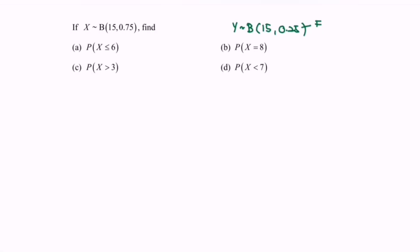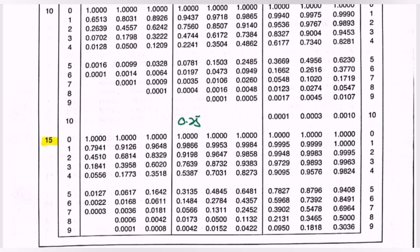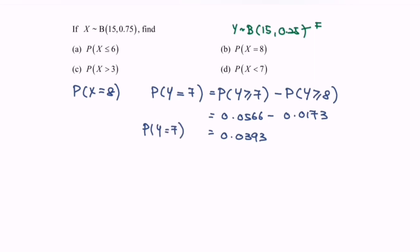For part B, we have the probability that x equals 8. Reversing the situation, we get the probability that Y equals 15 minus 8, which is 7. Using the binomial distribution table, the formula is P(Y ≥ 7) minus P(Y ≥ 8). From the table: P(Y ≥ 7) = 0.0566 and P(Y ≥ 8) = 0.0173. So 0.0566 minus 0.0173 gives 0.0393, which is the probability that Y equals 7, or equivalently that x equals 8. That is the answer for part B.